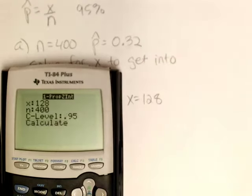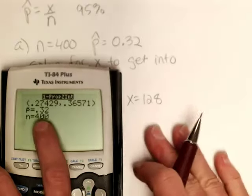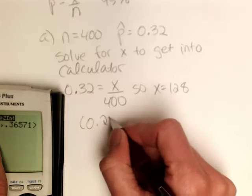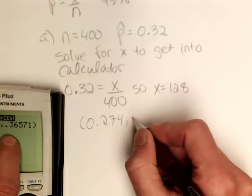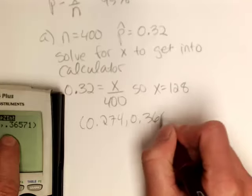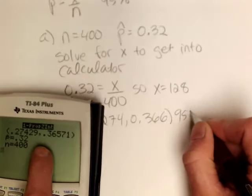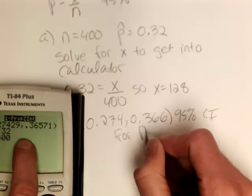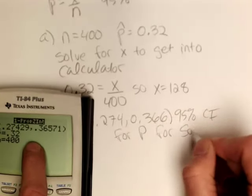So that's good. So I'll go ahead and round to three decimal places. So I have 0.274 up to 0.366. So this is a 95% confidence interval for P, for the folks in the south.